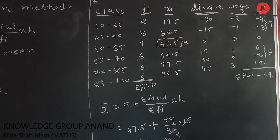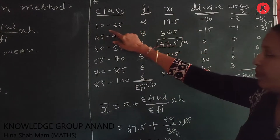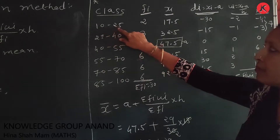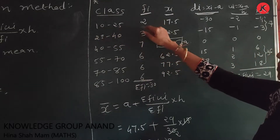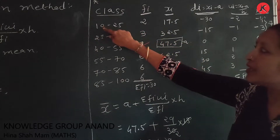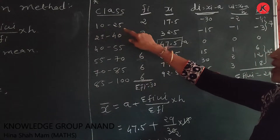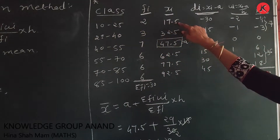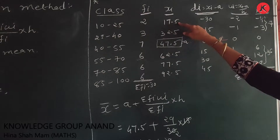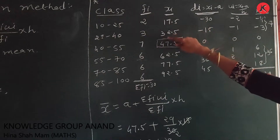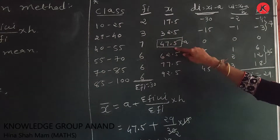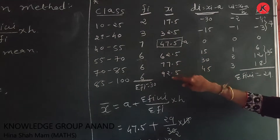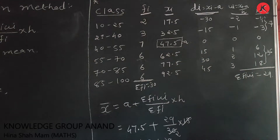First we find xi, the class mark, which is (lower limit + upper limit) / 2. So 10+25 / 2 = 35/2 = 17.5. Continuing: 32.5, 47.5, 62.5, 77.5, 92.5.